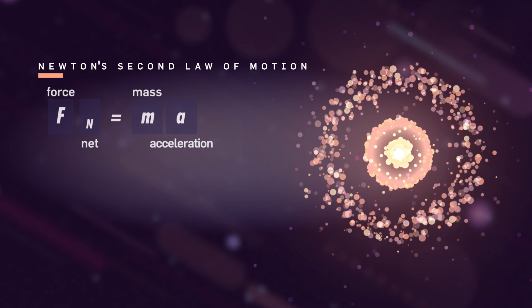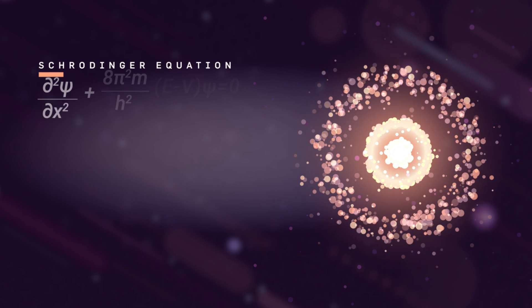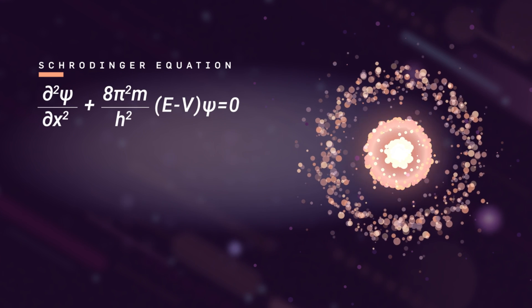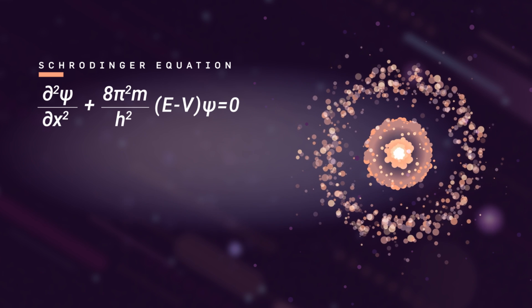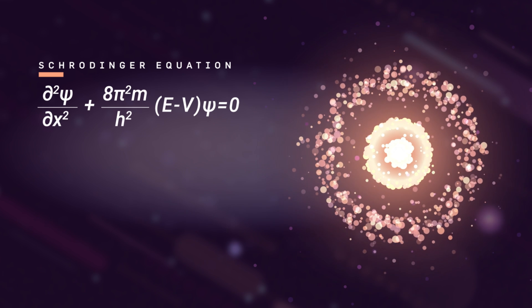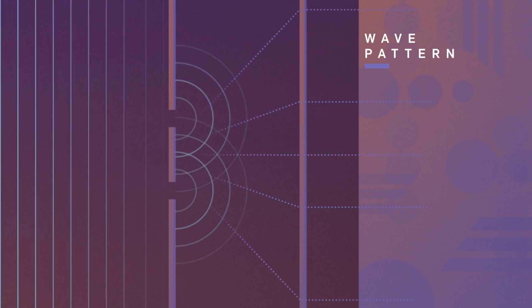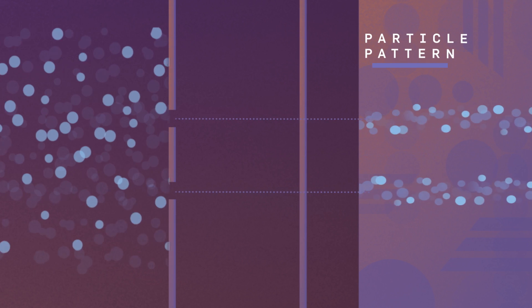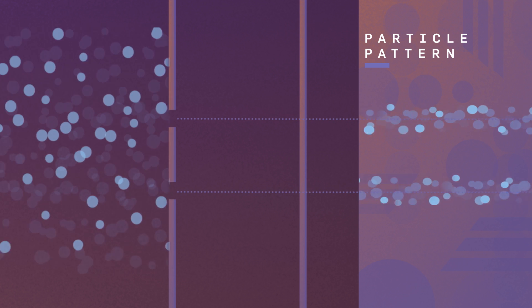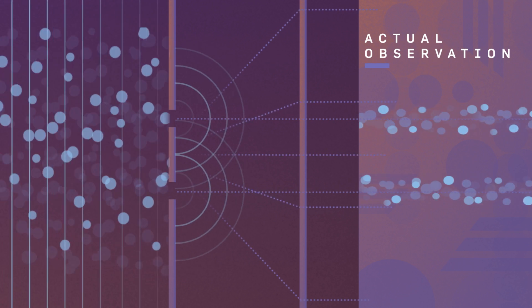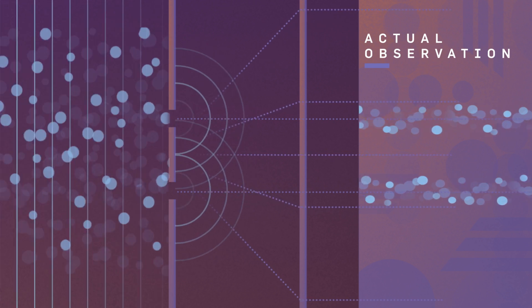Instead, it follows a somewhat more complicated equation called Schrodinger's equation or Schrodinger's wave equation. And this is where the so-called particle wave duality often comes up. Where people talk about particles behaving as waves and waves behaving as particles at the very, very microscopic scale. That there is no difference between those two concepts.